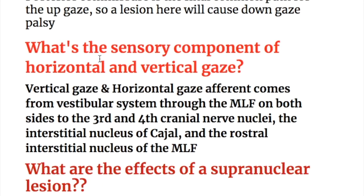What is the sensory component of horizontal and vertical gaze? The afferent for vertical and horizontal gaze comes from the vestibular system through the medial longitudinal fasciculus on both sides to the third and fourth cranial nerve nuclei, the interstitial nucleus of Cajal, and the rostral interstitial nucleus of medial longitudinal fasciculus.